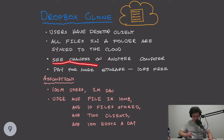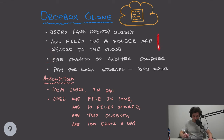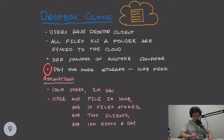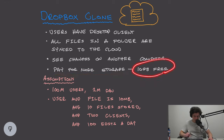Users need to be able to see changes on another computer. So if they uploaded files on one computer to our service, another computer needs to be able to download those files. Finally, our service cannot be free — we need to make money. Users will be able to pay for more storage; by default, users get 10 gigabytes for free.